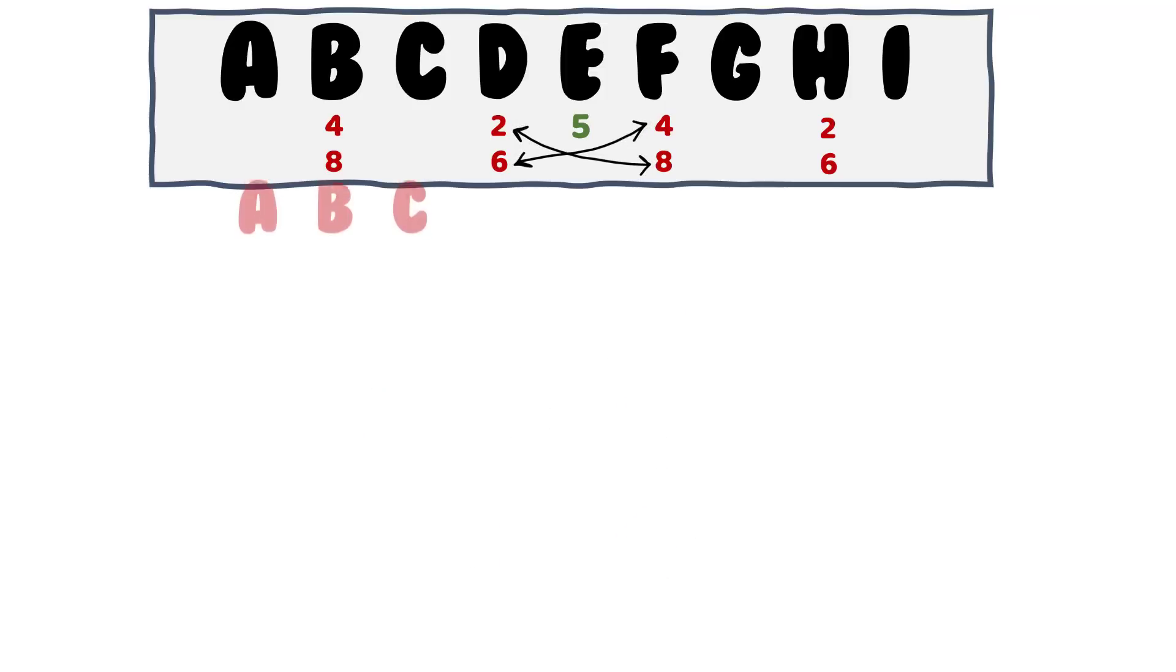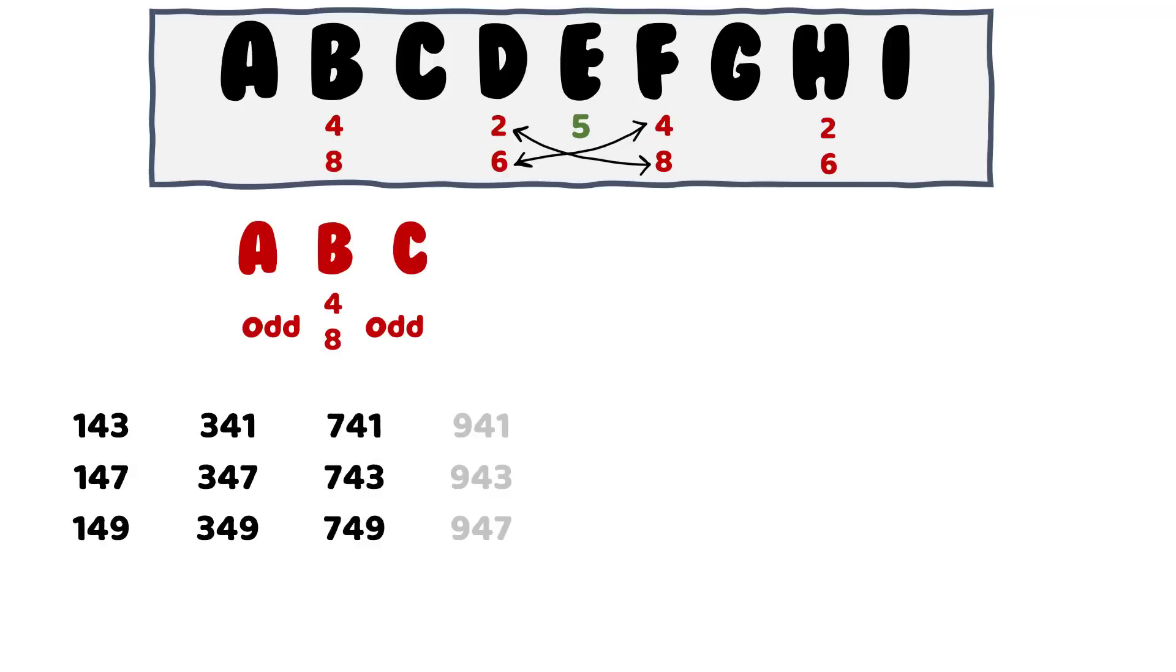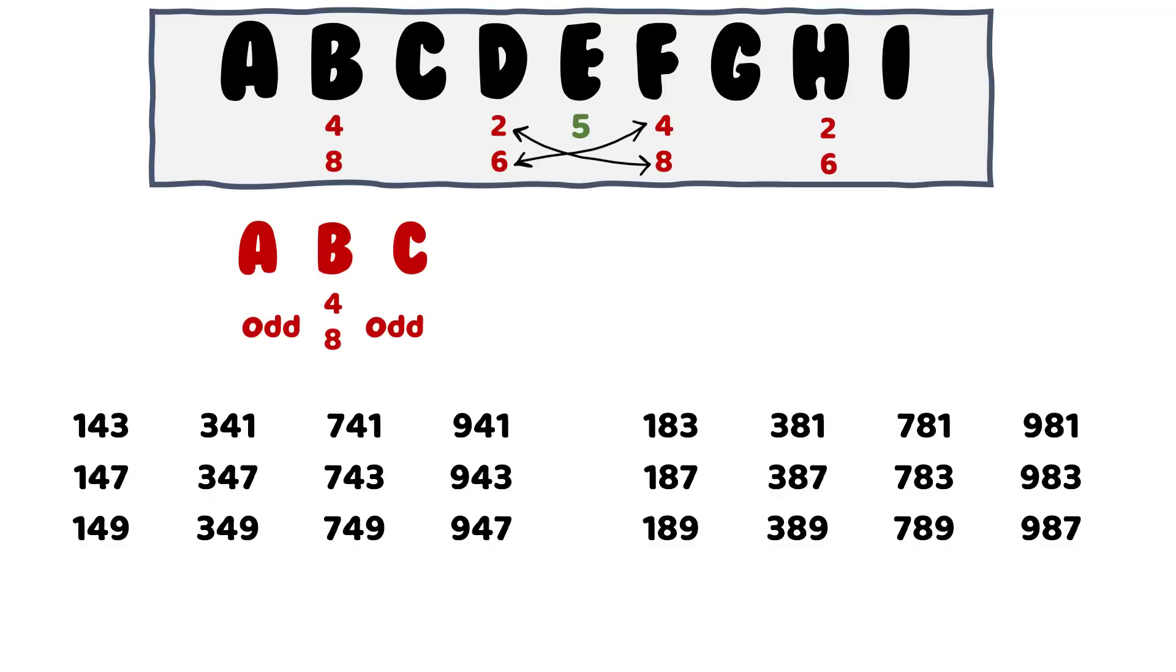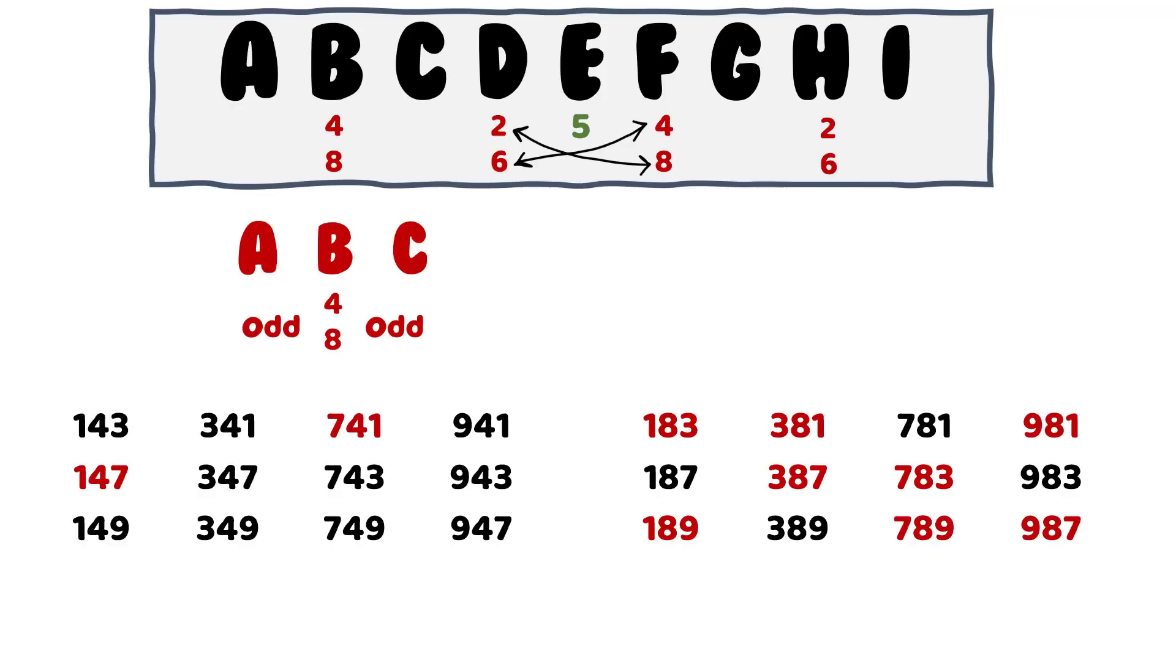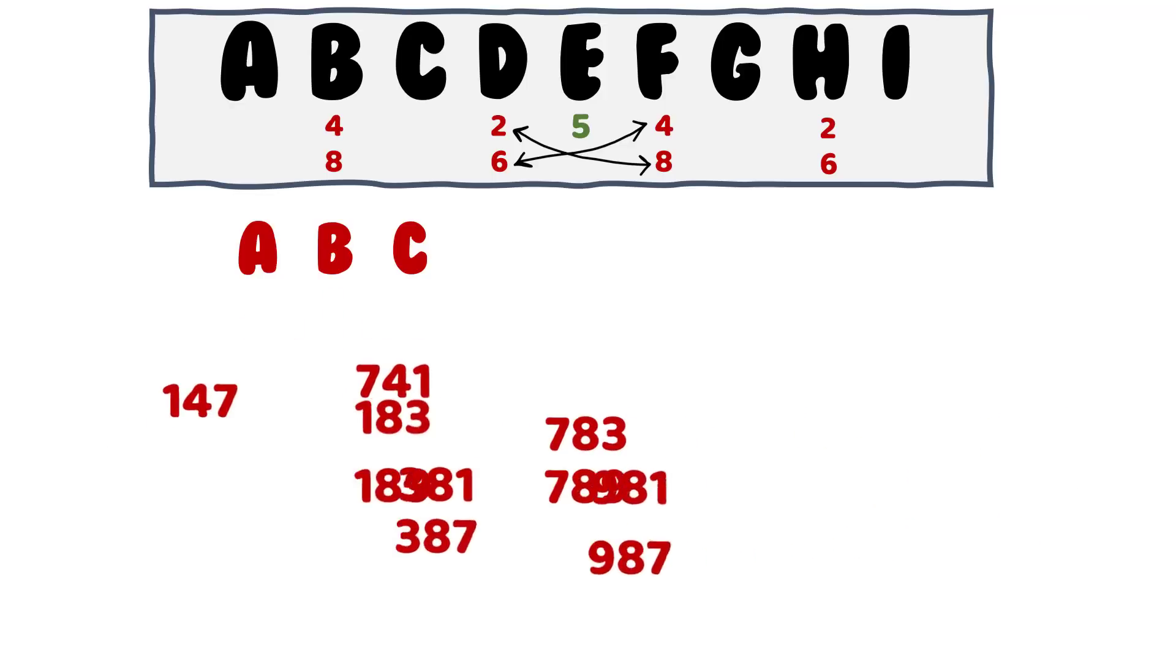Now, let's work on the number ABC. A and C are odd numbers and B is either 4 or 8. Let's list down all possible combinations of ABC. So here are the possible numbers with 4 in the middle and here is a similar set of numbers with 8 in the middle. And now, you can either check the divisibility by 3 manually or apply the divisibility rule of 3 that says if sum of all digits is divisible by 3, then the number is divisible by 3. So here are 10 possible numbers for ABC which are divisible by 3.